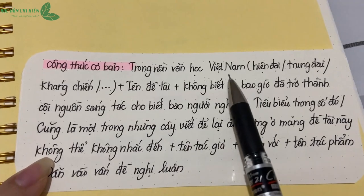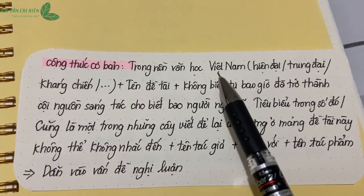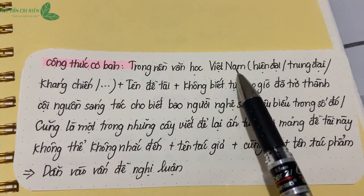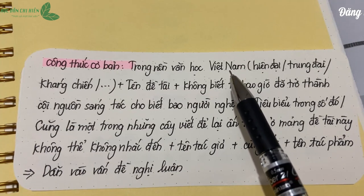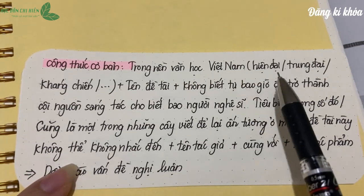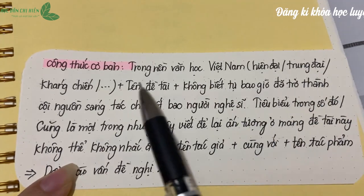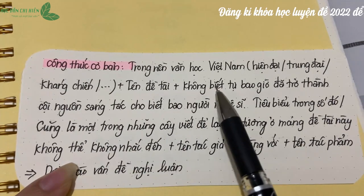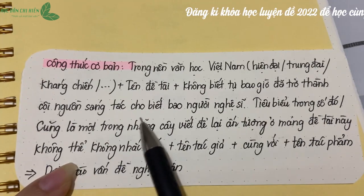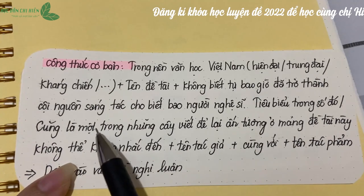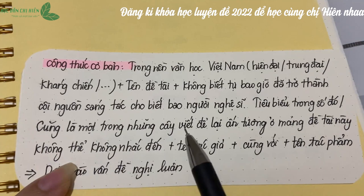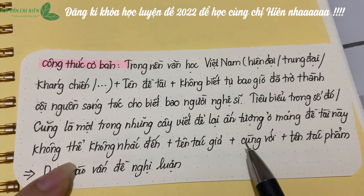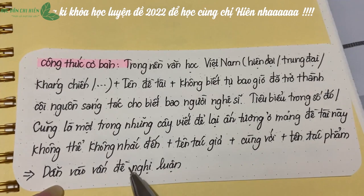Công thức cơ bản cho cách dẫn dắt từ đề tài: chúng ta sẽ có 'Trong nền văn học Việt Nam' - có thể cụ thể hóa thành văn học Việt Nam hiện đại, trung đại, hay văn học kháng chiến - cộng với tên đề tài, sau đó phần dẫn dắt 'không biết từ bao giờ đã trở thành cội nguồn sáng tác cho biết bao người nghệ sĩ'. Tiêu biểu trong số đó, không thể không nhắc đến cộng với tên tác giả, cùng với tên tác phẩm, và sau đó dẫn vào vấn đề cần nghị luận.